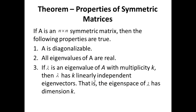Let's look at some properties of symmetric matrices. Theorem: If A is an n-by-n symmetric matrix, then we can conclude the following. Number 1: A is diagonalizable. Number 2: All eigenvalues of A are real — no complex eigenvalues. And number 3: If lambda is an eigenvalue of A that has multiplicity k, then lambda has k linearly independent eigenvectors, i.e., the eigenspace of lambda has dimension k.